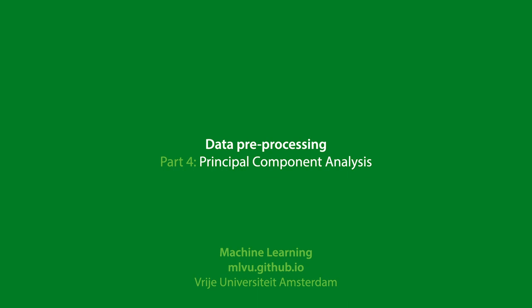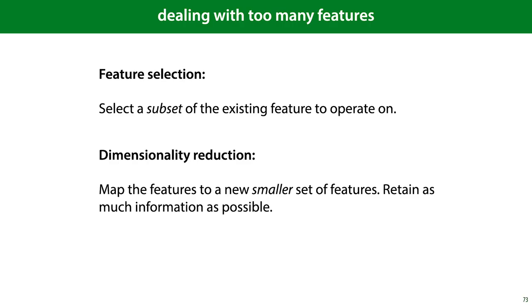Some datasets have more features than a given model can handle. In that case, there are two things we can do. We can try to find a subset of the features that is most informative and operate on those.